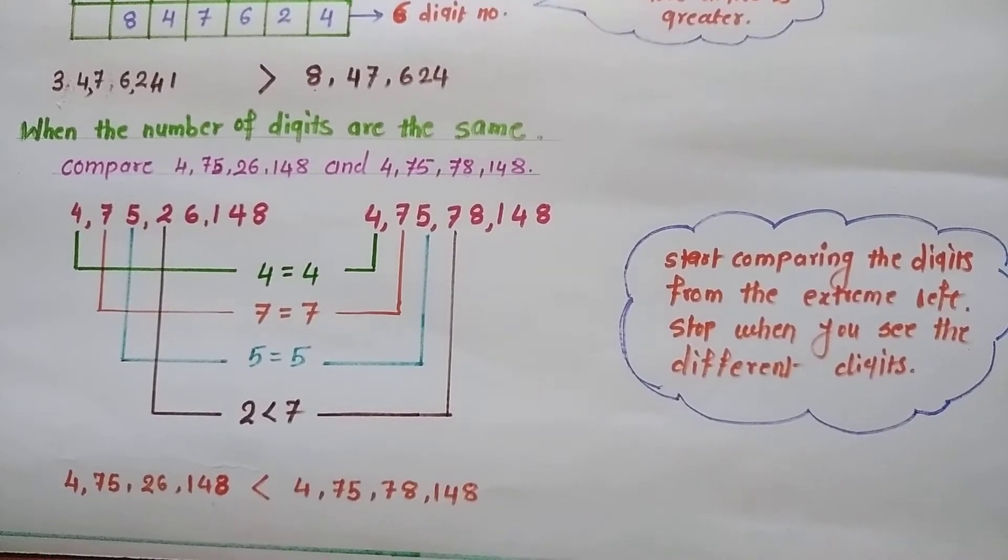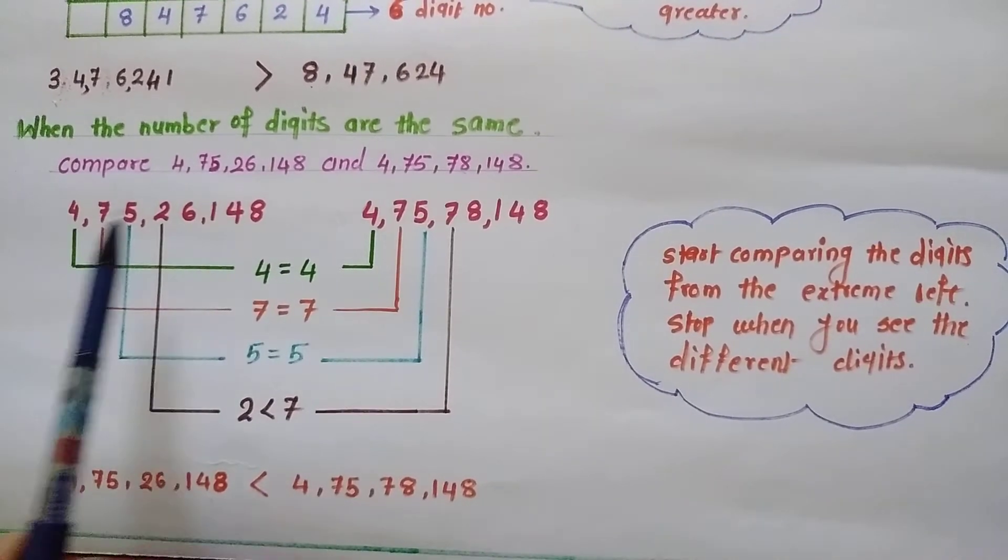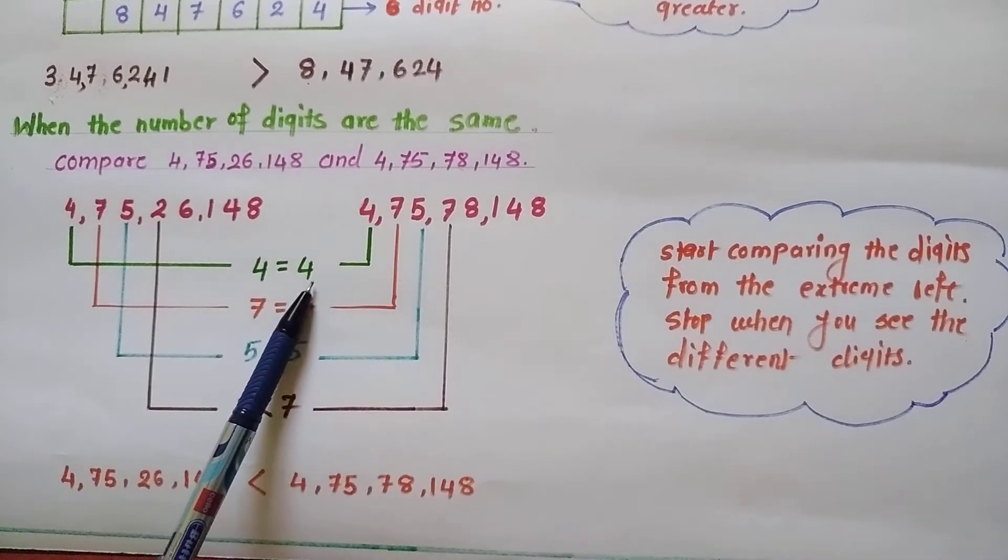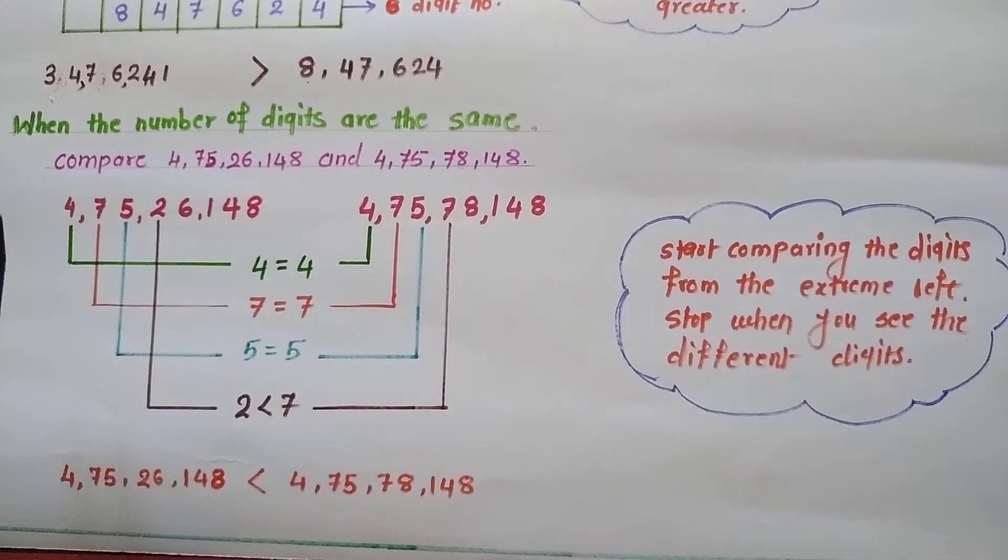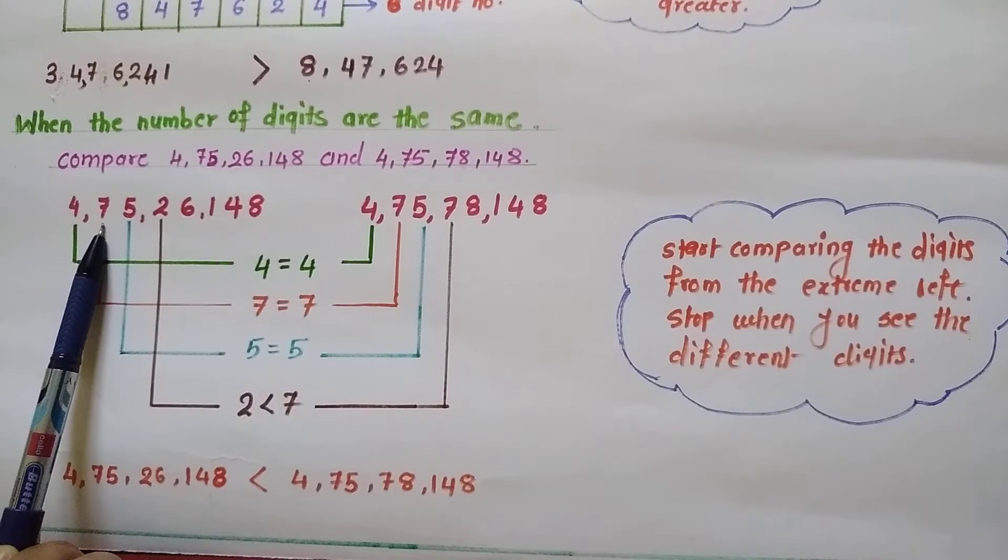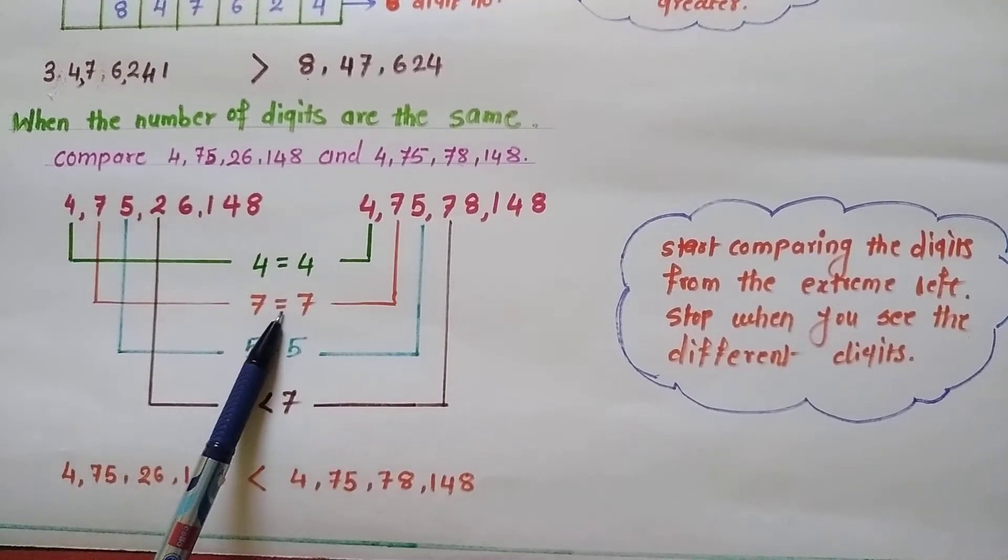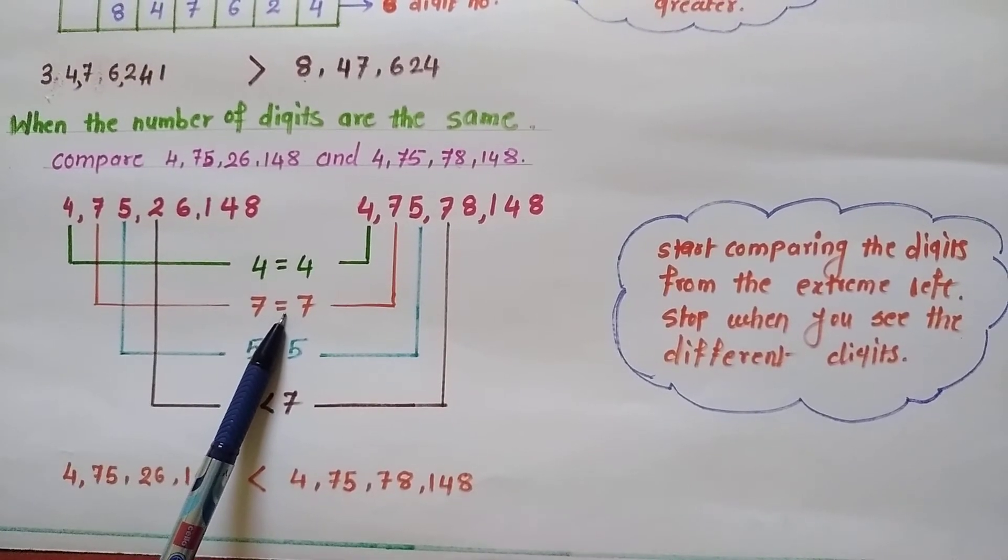So, start comparing the digits from the extreme left. The extreme left digit of both the numbers is 4, which we found as same. So we need to compare the next digit. The next digit of 4 is 7 here, and here again 7, which we found again same. So we compare the next digit. The next digit of 7 in the first number is 5, and in the second number as well 5.